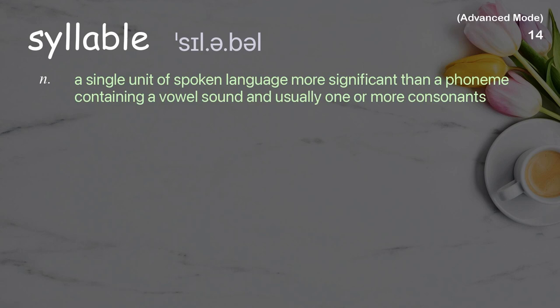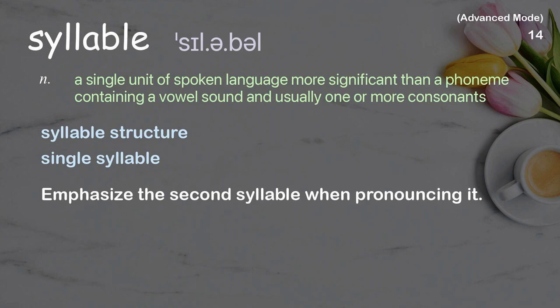Syllable: a single unit of spoken language, more significant than a phoneme, containing a vowel sound and usually one or more consonants. Examples: syllable structure, single syllable. Emphasize the second syllable when pronouncing it.